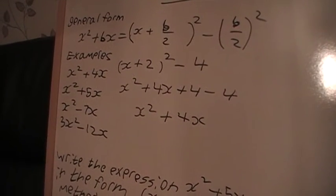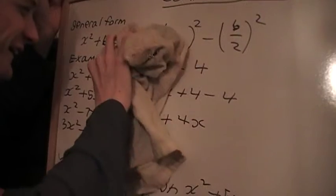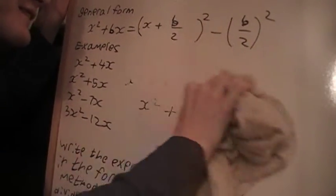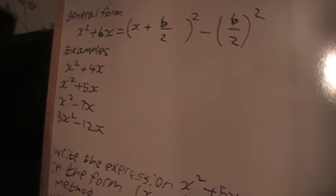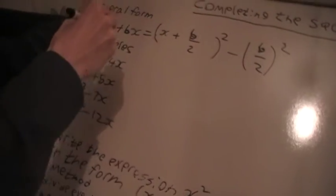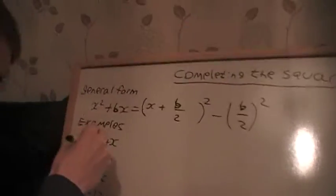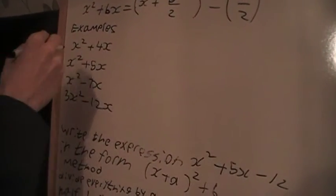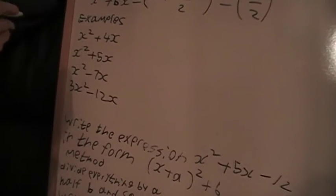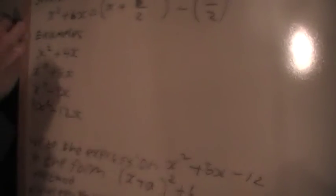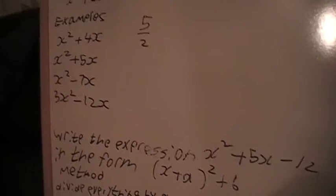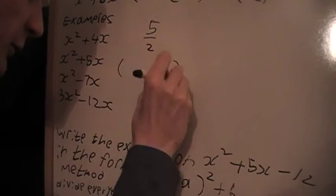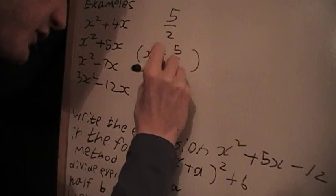So let's see some of our examples. I've got x squared plus 5x, and what I'm going to do is I'm going to half this term here, 5, so I'll get 5 halves. So in the brackets then we'll have x plus 5 halves squared.